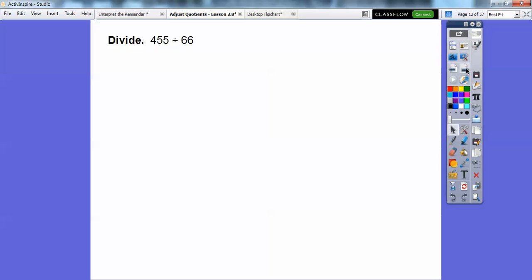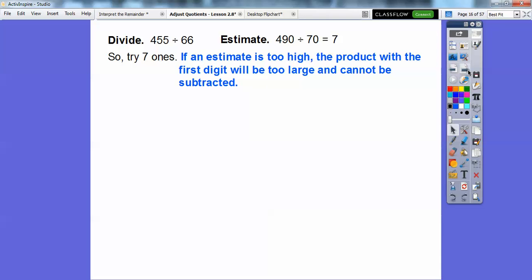Let's try 455 divided by 66. We're going to round this to 70 and round this to 490 because those are nice friendly numbers. 49 divided by 7 is 7. So we're going to put 7 in the ones spot right there. Try 7 ones. If the estimate is too high, then the product of the first digit will be too large and can't be subtracted.